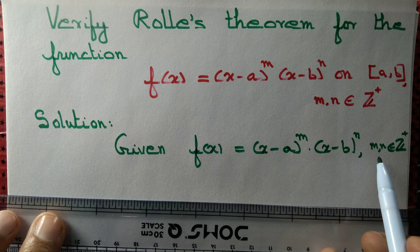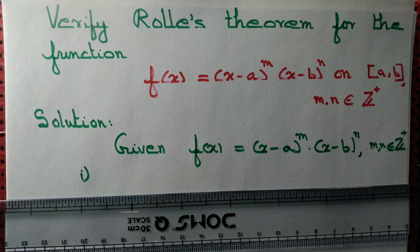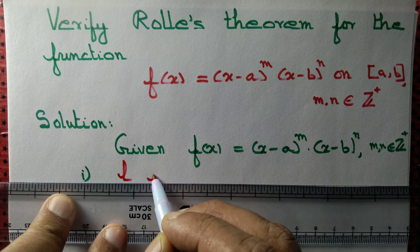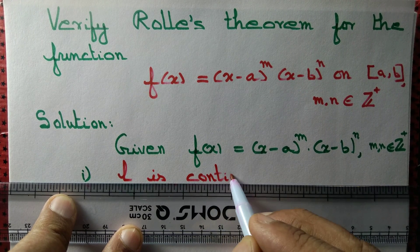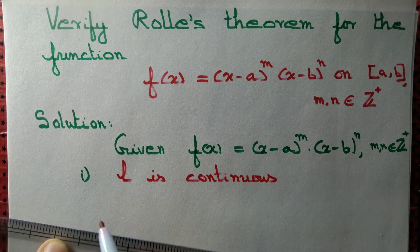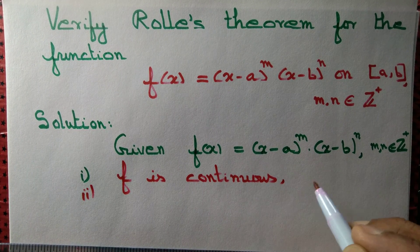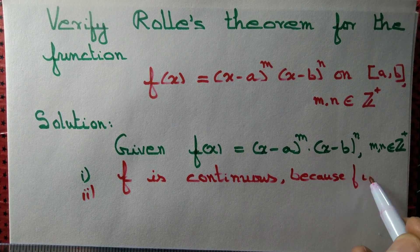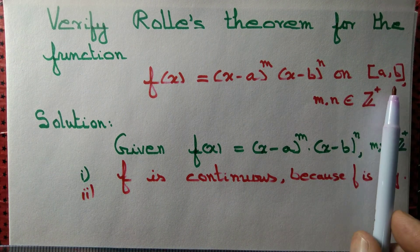This is a polynomial as long as m and n are positive integers, and polynomials are continuous. First point: f is continuous. Why is f continuous? It is a polynomial function. Polynomial functions are continuous throughout ℝ, so f has to be continuous, in particular on this closed interval.